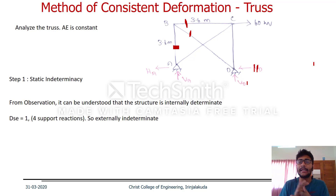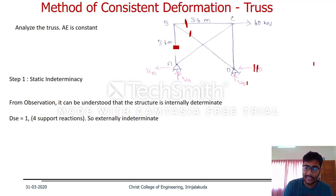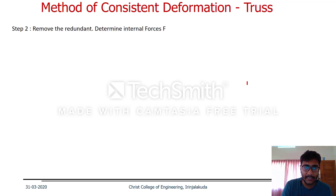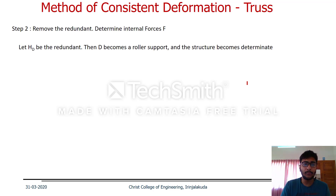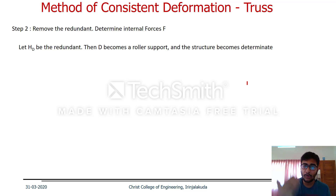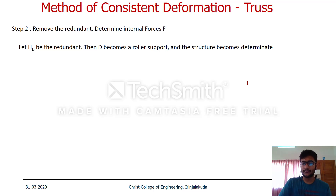For an externally indeterminate structure, we take the horizontal reaction at D, H_D, as the redundant support reaction. Removing H_D converts D from a hinge to a roller support, making the structure a determinate structure. That brings us to Step 2: remove the redundant and determine the internal forces, capital F.